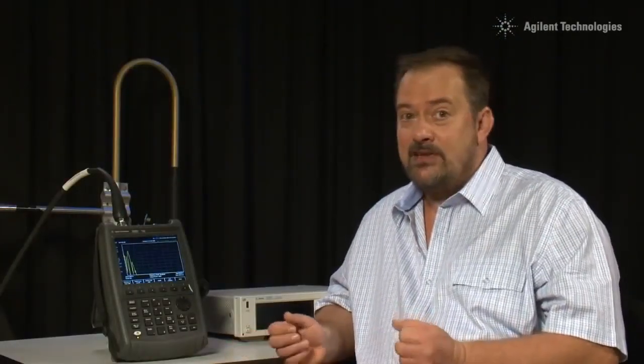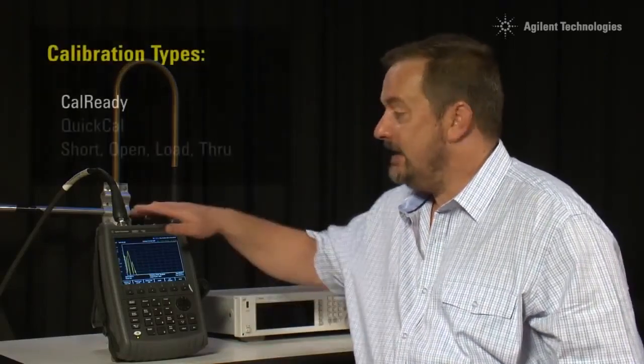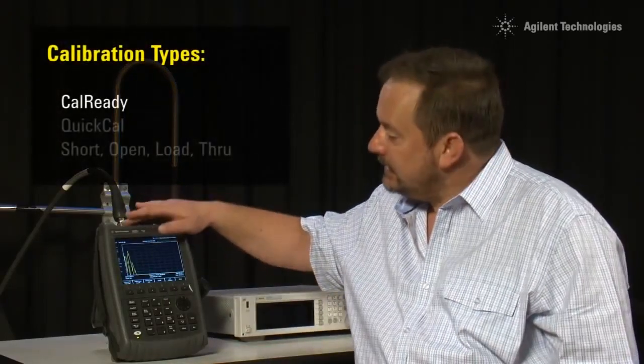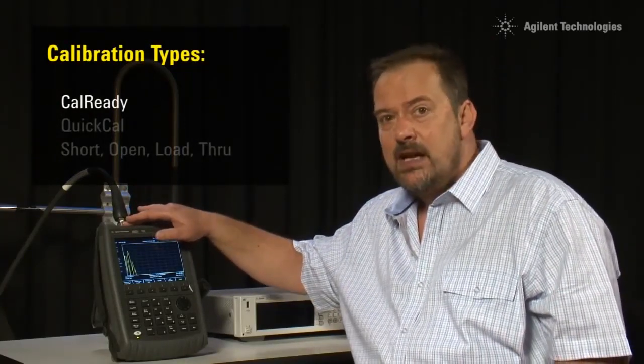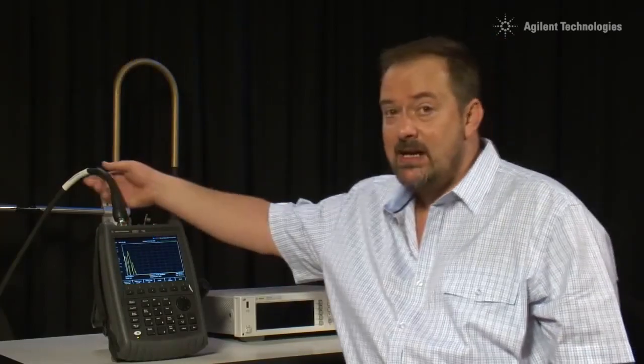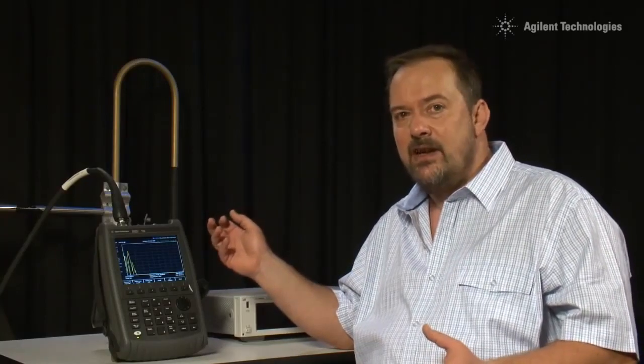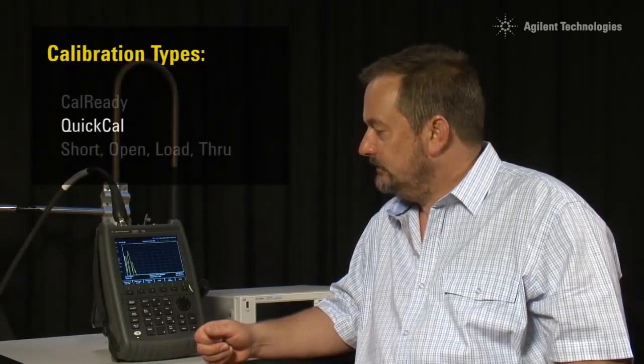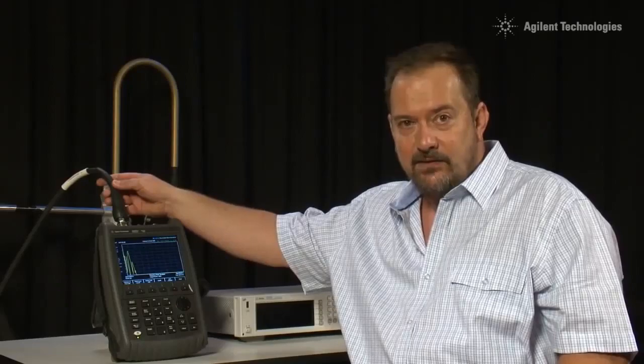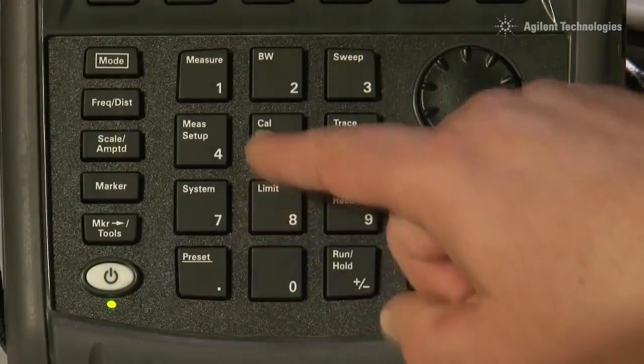For all the measurements we have made so far, we have not done any calibration at all with an Open Short or Load, simply because the CalReady is already built in. This port here is factory calibrated at all frequencies. But often, we will want to calibrate out the effect of perhaps our fly lead or another cable in the system. How can we do that quickly and effectively without having to go through the full Open Short Load calibration that you may be used to? Well, that is where QuickCal comes into its element. I will disconnect the fly lead from the antenna, and I will press Cal.